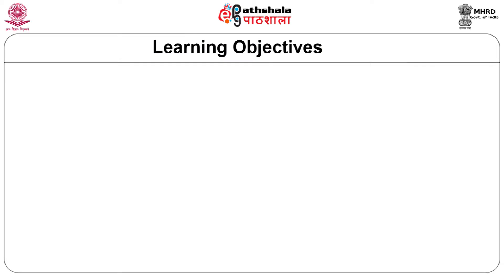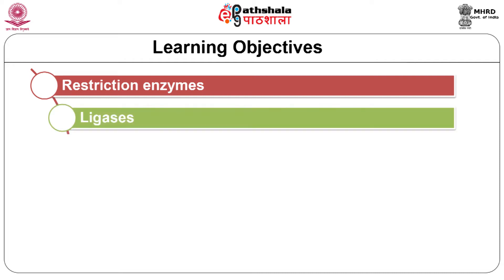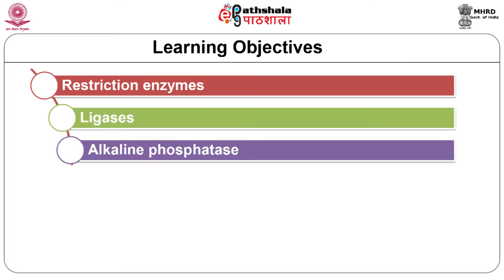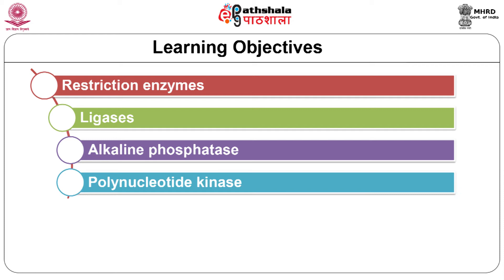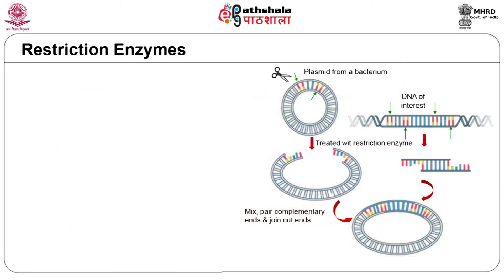The learning objectives are to study some of the tools used for introducing a new gene into a plant to make transgenic plants. These include enzymes like restriction enzymes, ligases, alkaline phosphatases, polynucleotide kinases and topoisomerases. Restriction enzymes are one of the essential tools of genetic engineering, which are used to make recombinant DNA.